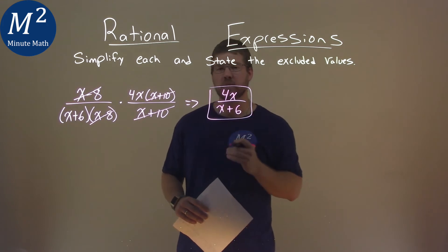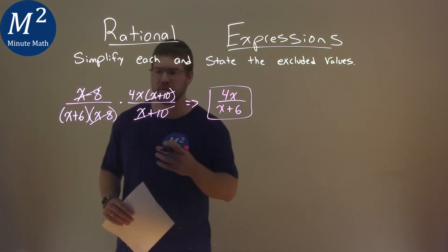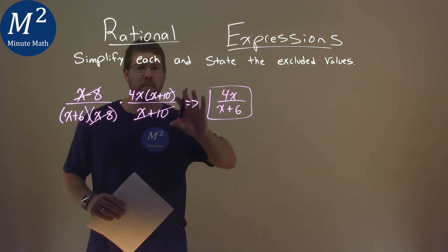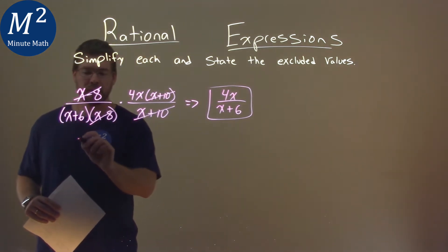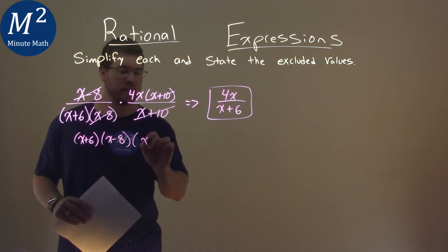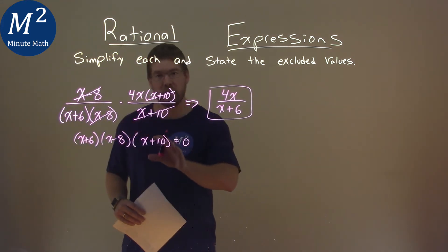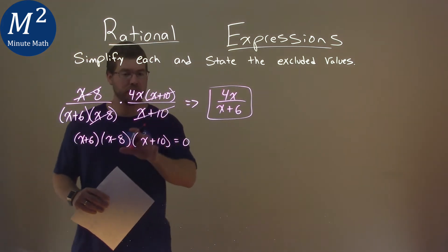But we need to find the excluded values and that is when our denominator is equal to 0. So you think about this as one big expression, our denominator is the x plus 6 times the x minus 8 times the x plus 10, and we need to determine when the x values here cause this to equal 0.